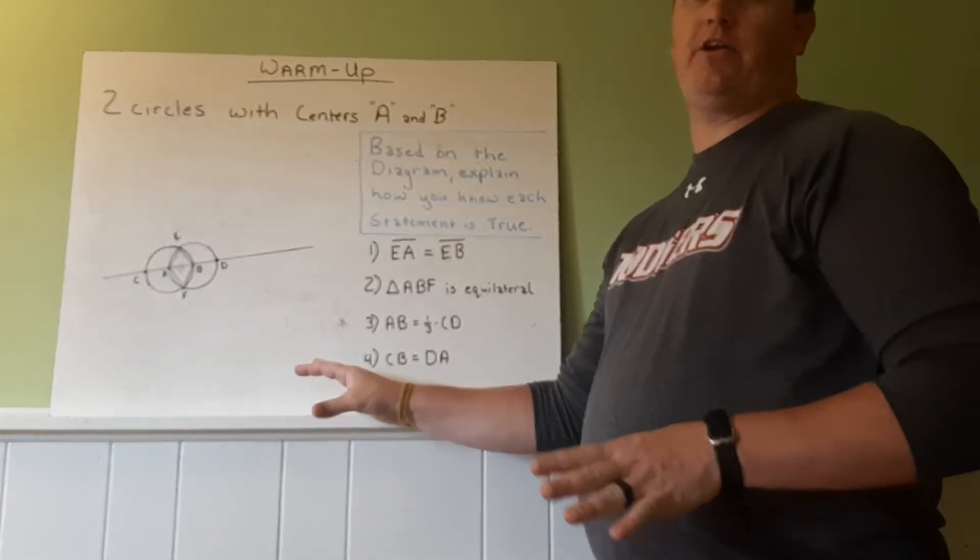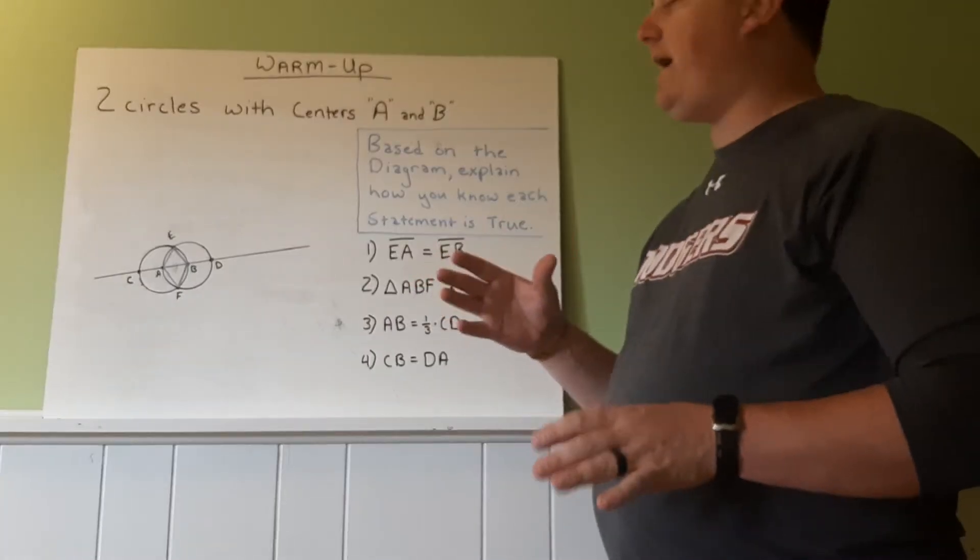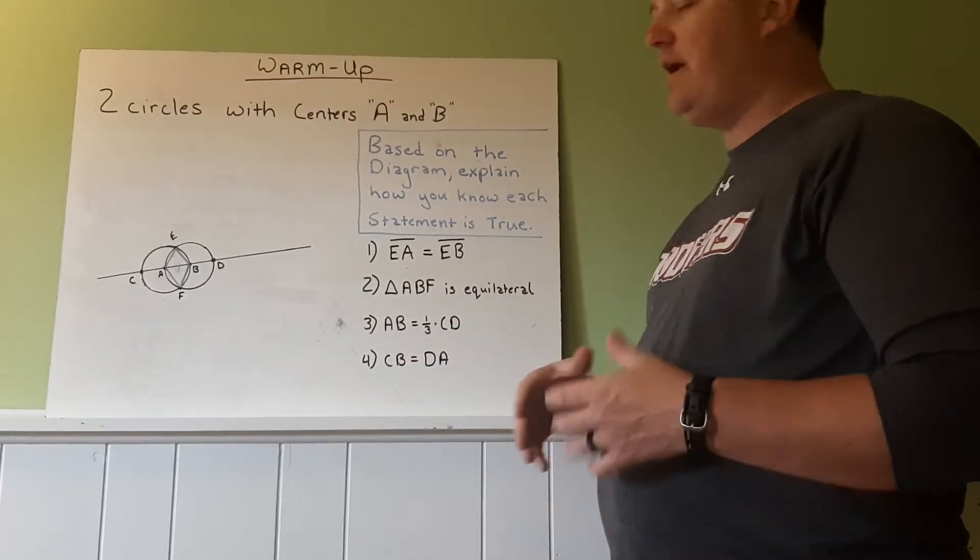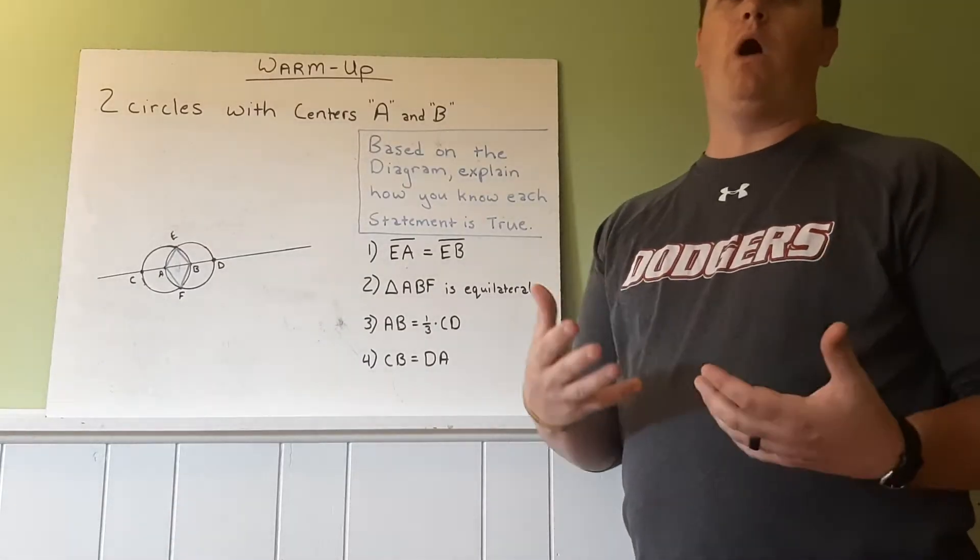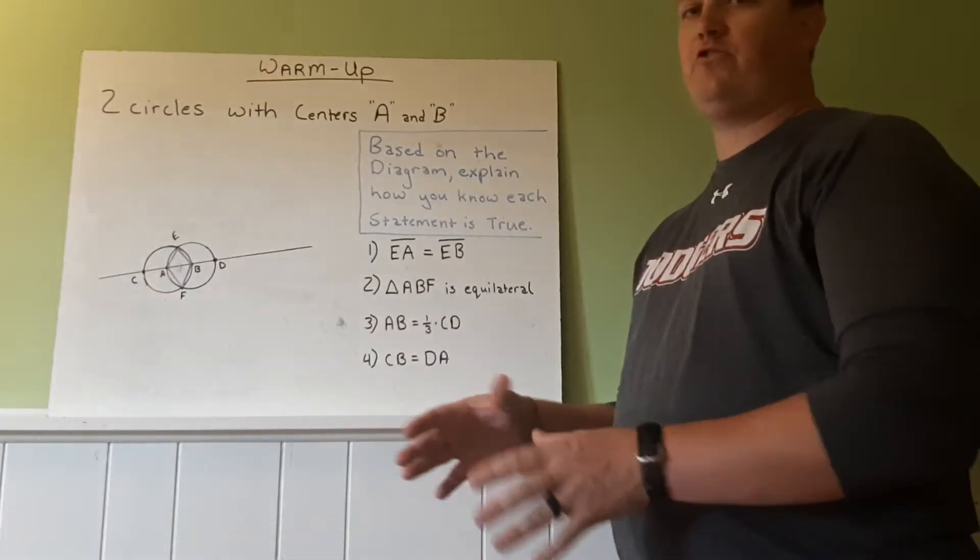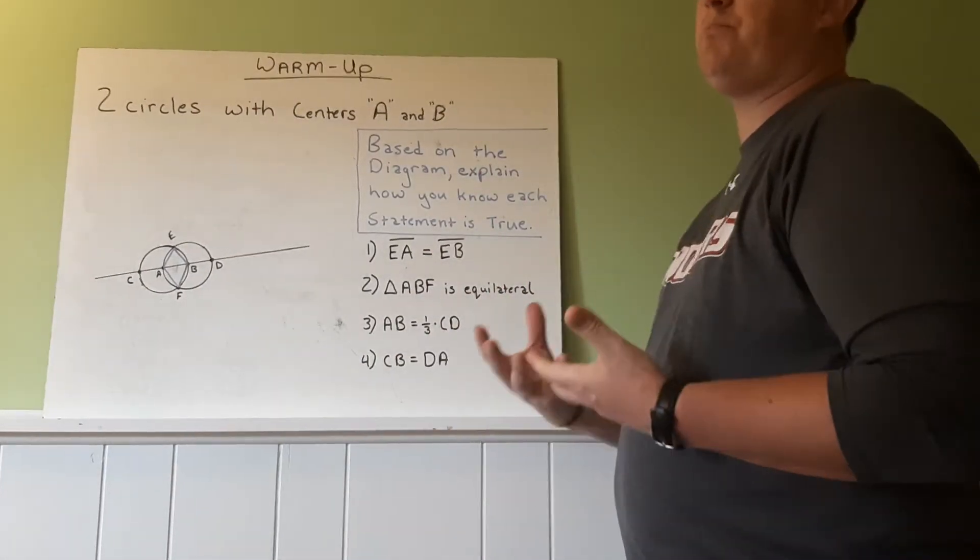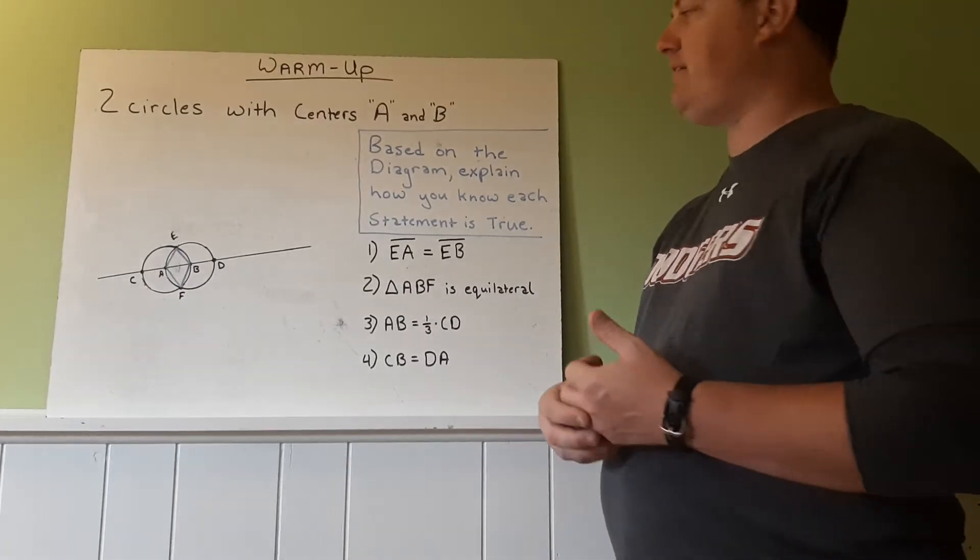So based off of this diagram, if you just kind of map it out on your own paper, what I want you to do is try and explain why you think these statements are true. And they all are true. You just need to come up with why. So I want you to dig into your math knowledge and figure out, okay, these are true because of this. And just explain it. This is kind of known as a proof.